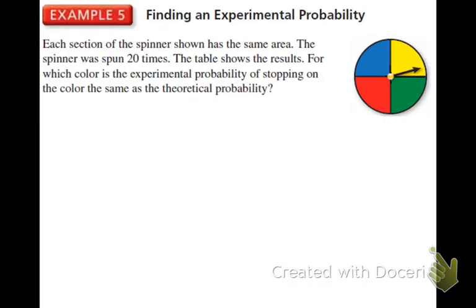This is experimental probability and it reviews theoretical probability. Each section of the spinner has the same area. Why does it matter that they have the same area? That means they're all equal — equal odds of getting any of them.